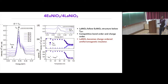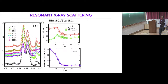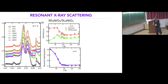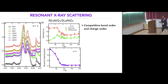To confirm these findings, we performed the same experiment on the 5-5 system. Here also we can see that the off-resonance intensity is decreasing below the metal-to-insulator transition, consistent with our conclusion.